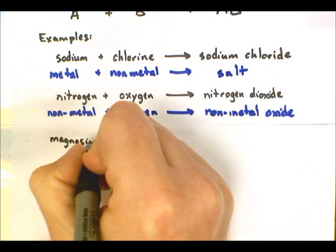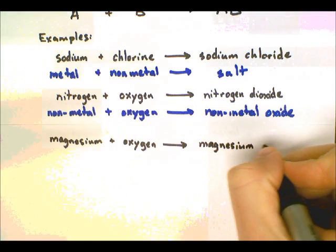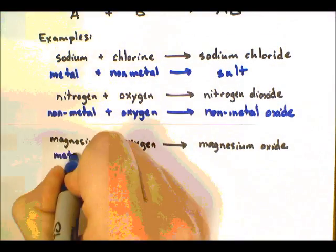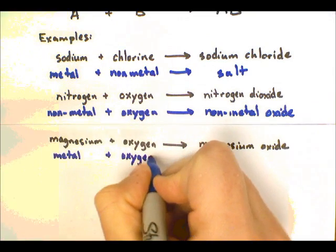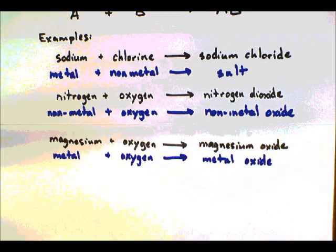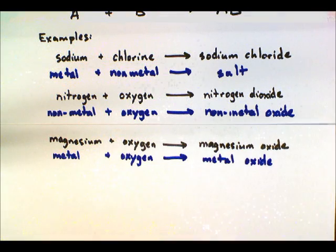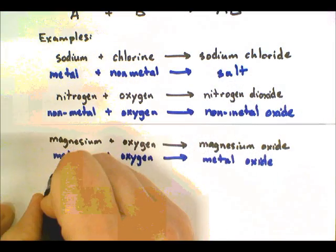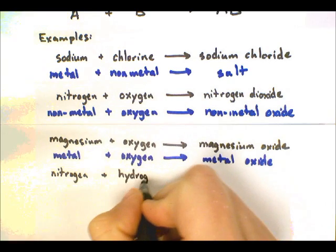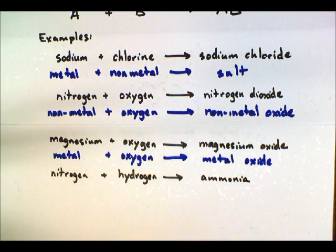Another example would be magnesium and oxygen. Instead of a non-metal, now we're working with a metal. Metals can oxidize — we've seen this before; the copper on the roofs of old buildings oxidizes and turns green. Magnesium can oxidize, so if it reacts with oxygen, we get magnesium oxide. Metals will react with oxygen to create metal oxides. These are important because metal oxides can be used in other reactions as well.